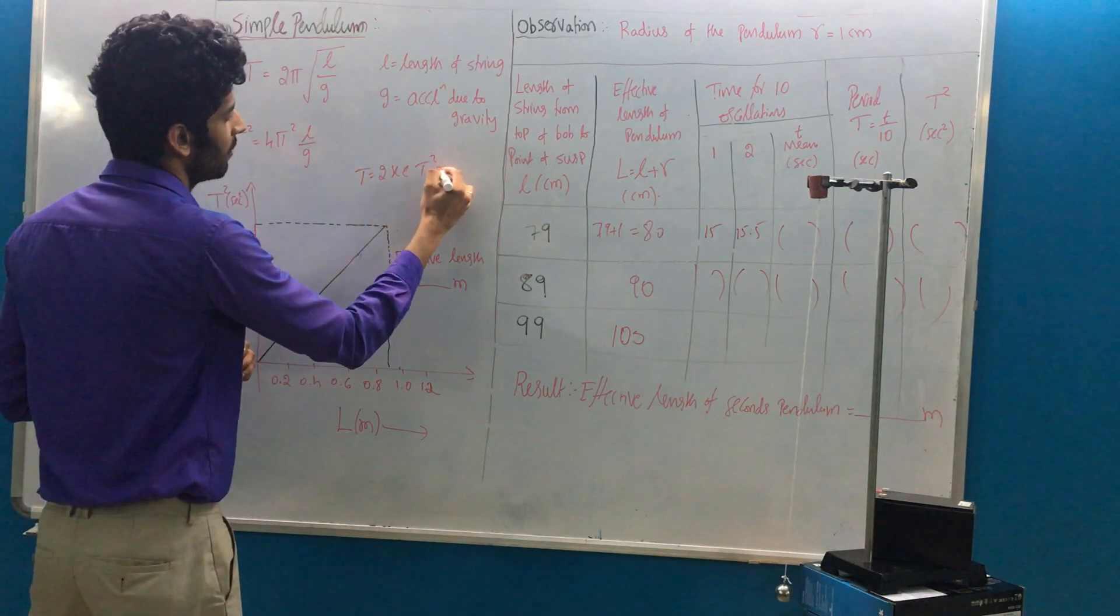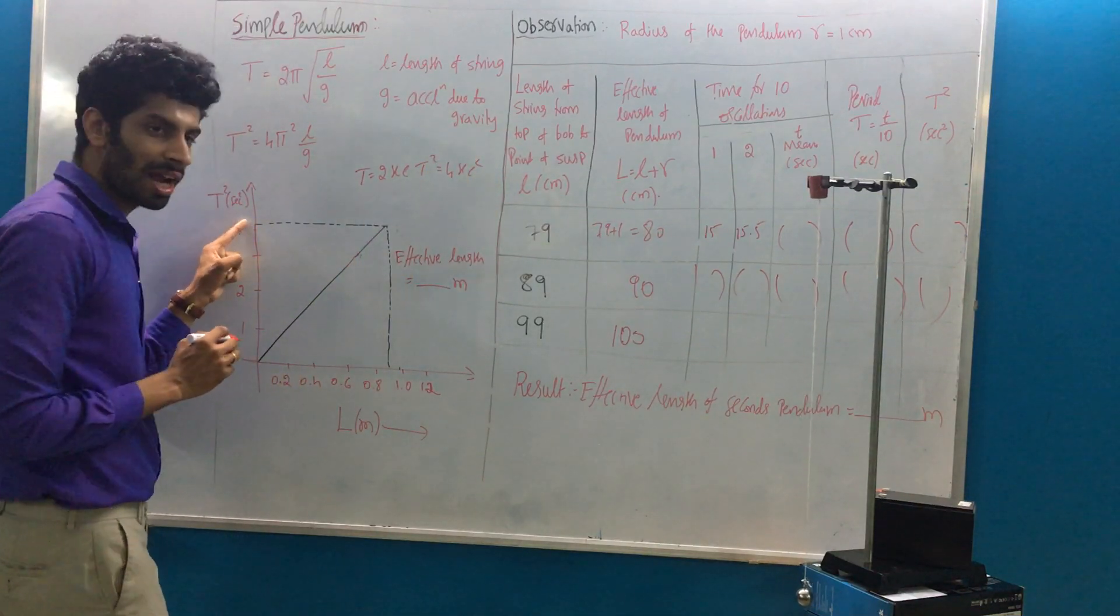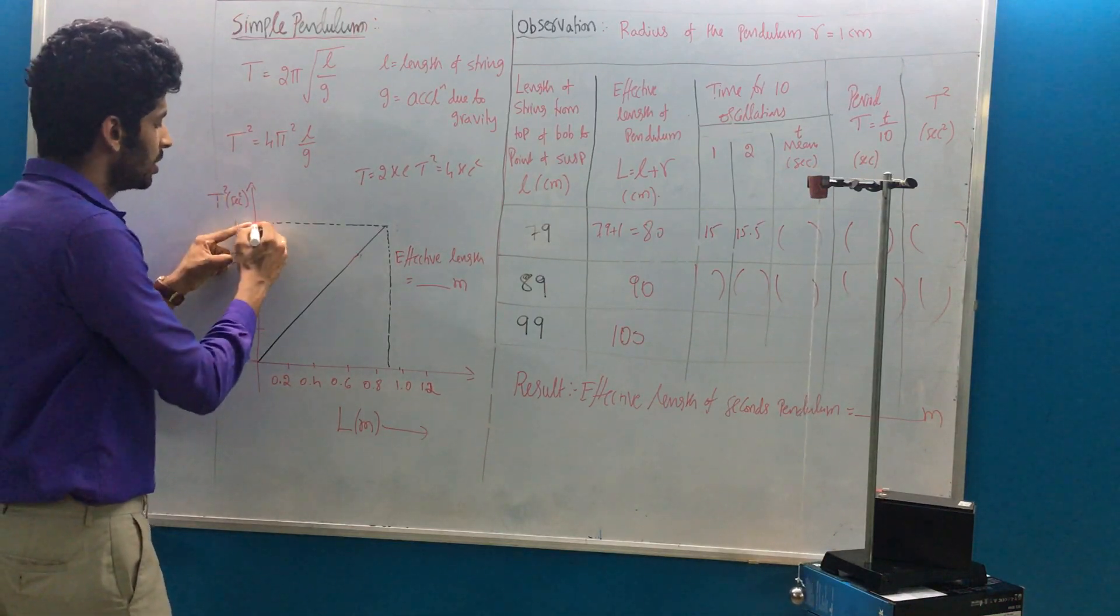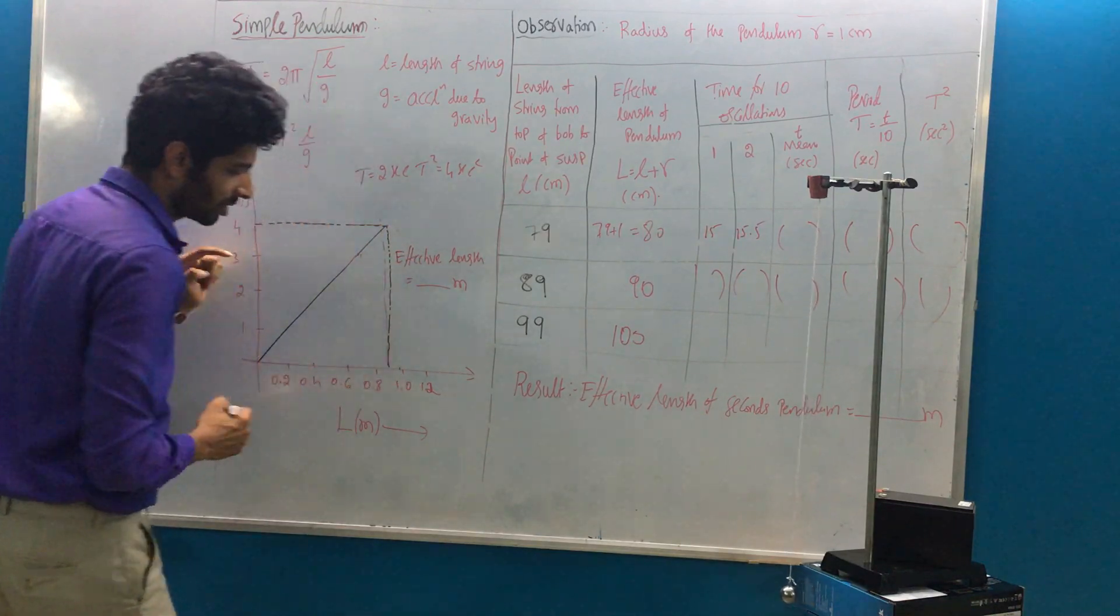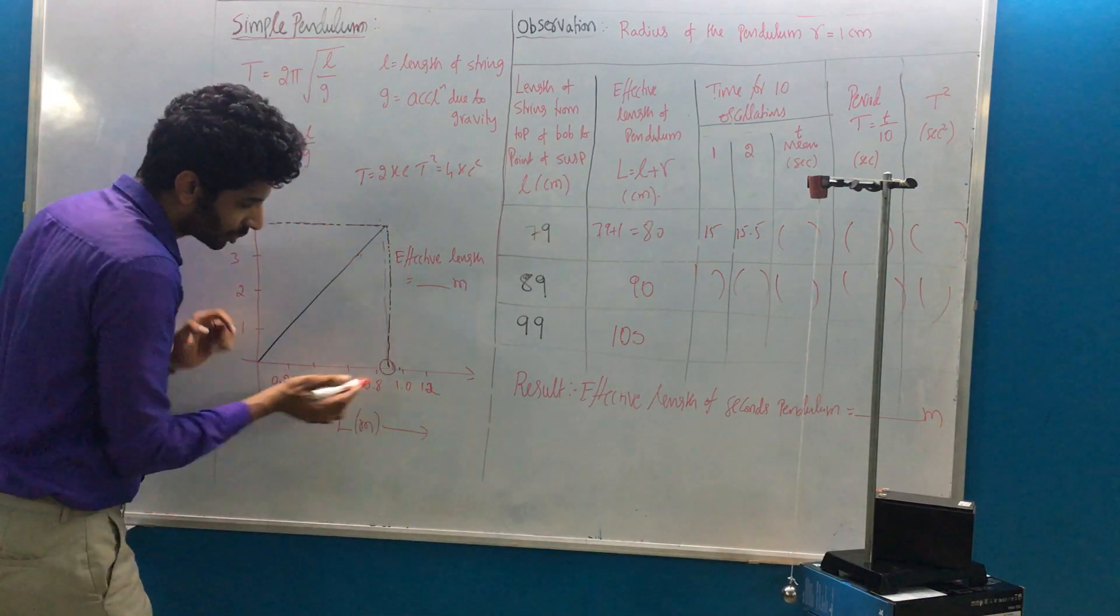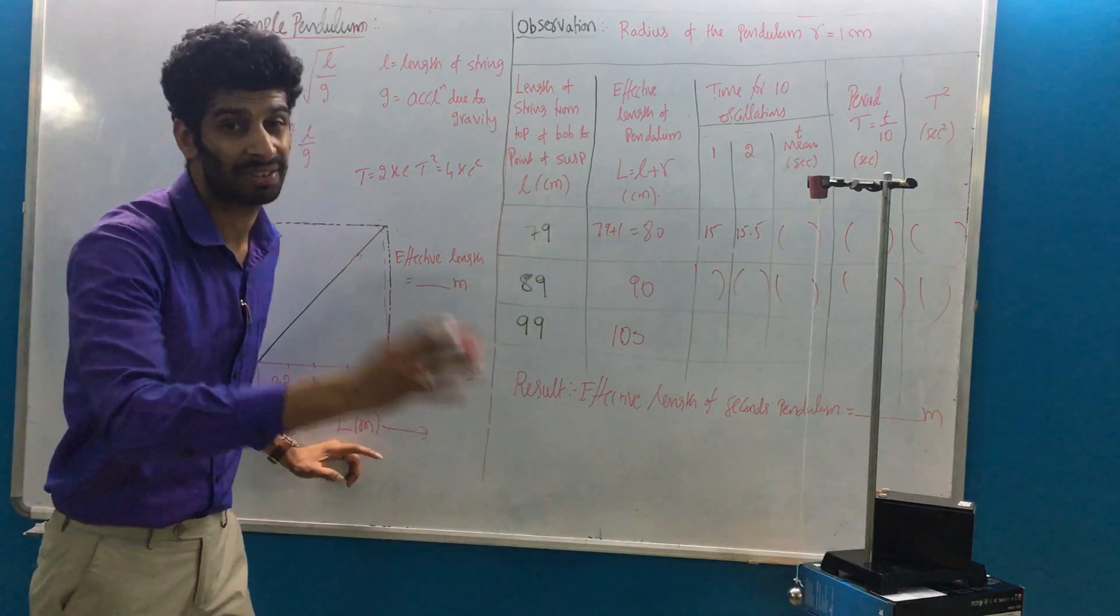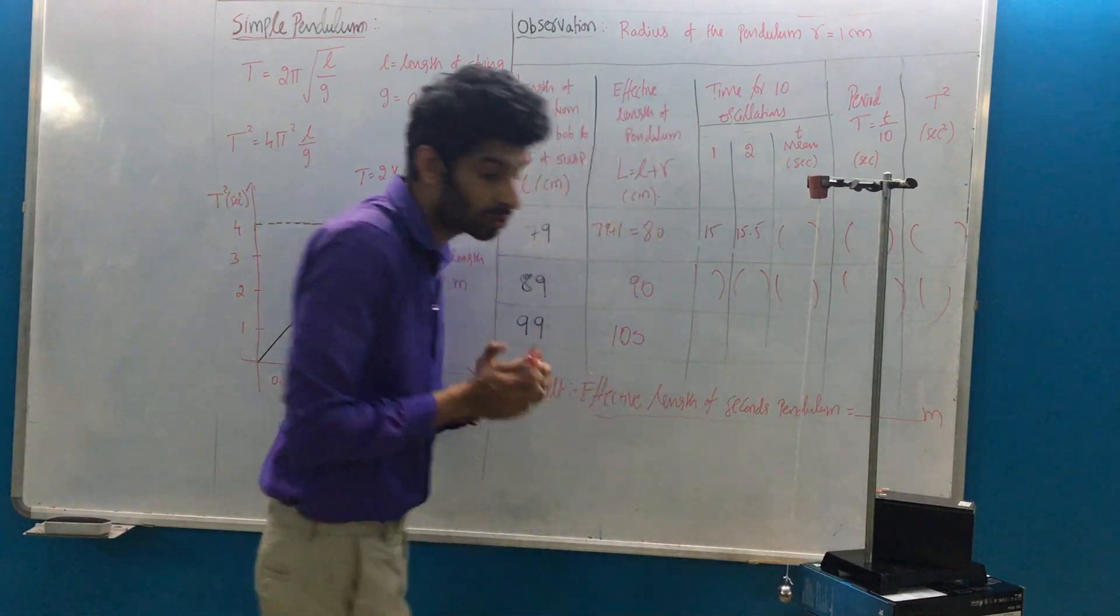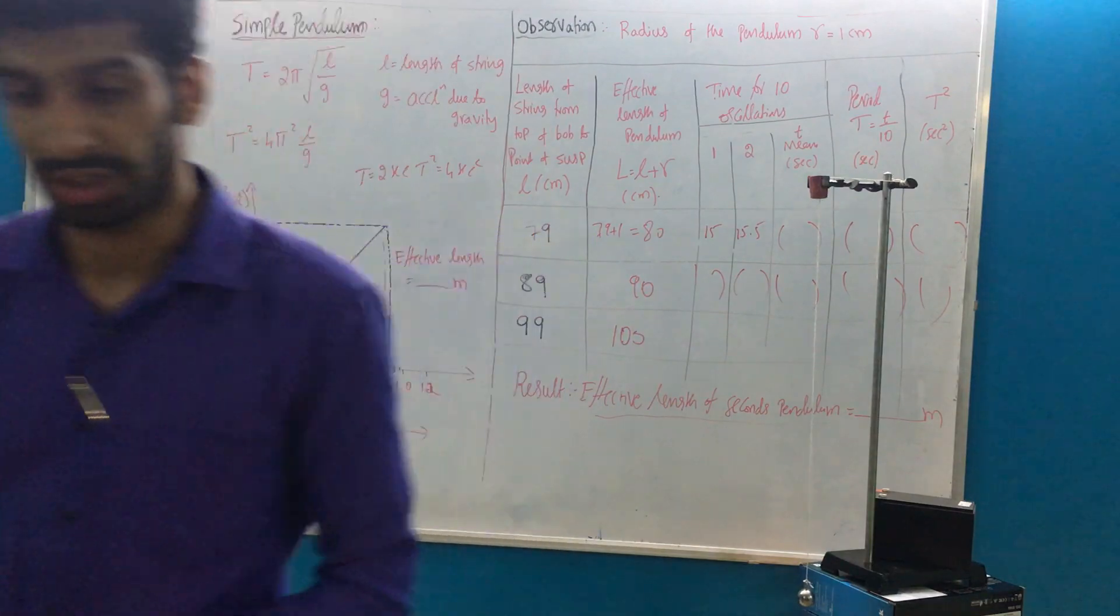T² will be equal to 4 seconds squared. On the graph, mark 4 seconds squared along the y-axis where T² is plotted. Draw a line which cuts the straight line and then draw a line to the x-axis. Whatever value it shows along the x-axis is nothing but the effective length of the seconds pendulum. That is what we should find out. Thank you for watching.